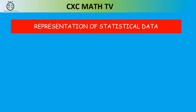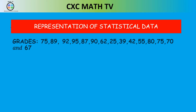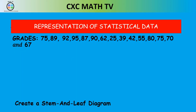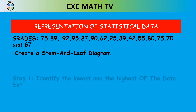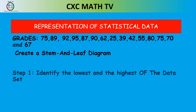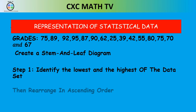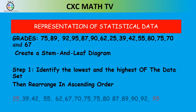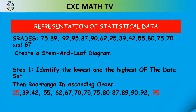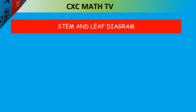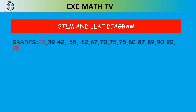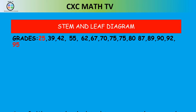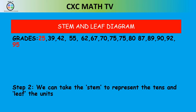Step number one: identify the lowest and the highest of the data set. The lowest is 25 and the highest is 95. Then rearrange the data in ascending order. Step number two: create a stem to represent the tens units, and a leaf to represent the single units.